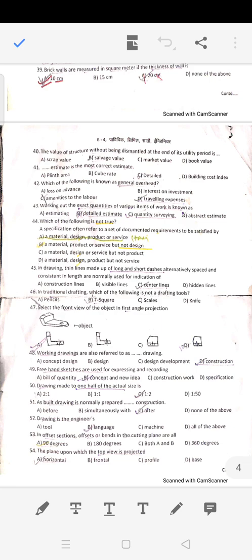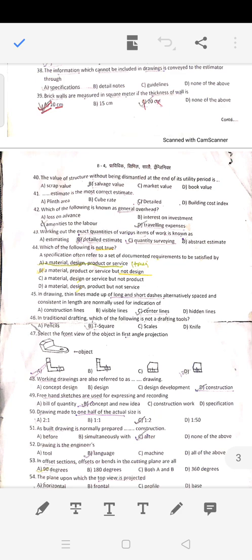Question 38: Detailed estimate is the most accurate or correct estimate. Question 42: General overall includes the cost of material, labor charges, and travel expenses. Question 43: Working out the exact quantities of various items of work is called taking off or detailed estimating.